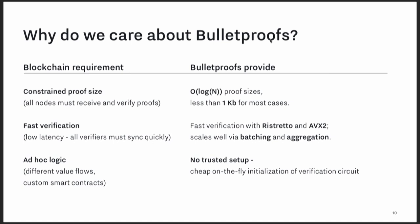So why do we care about Bulletproofs? There are a lot of zero-knowledge proof protocols out there, but Bulletproofs is particularly cool because it has a constrained proof size, which is important for blockchains because you want everyone to receive and store the proof on the blockchain. Bulletproofs gives you O(log n) proof sizes, thanks to the efficient inner product proof. It also gives you fast verification — not only because the math can be verified quickly, but also because you can batch multiple proofs and verify them together. You can also aggregate proofs, squishing multiple proofs into one. And unlike zkSNARKs, in Bulletproofs you don't have to do a trusted setup for these circuits, so you don't need a complicated setup ceremony.